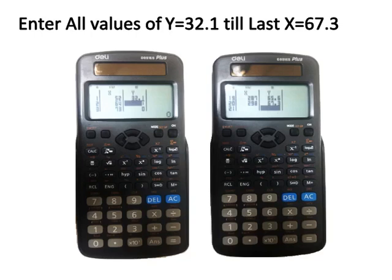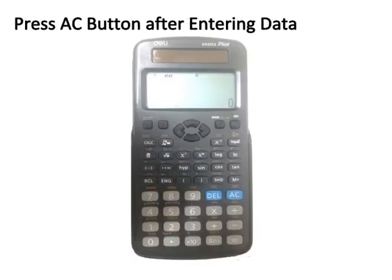If you find a mistake in observation 15 and press DEL, observation 16 becomes 15, and so on — so you will need to delete all remaining observations from 15 to 20, otherwise row values in both columns will not match. Be careful when entering data. After entering all X and Y data, check it using the up and down buttons, then press the AC button.